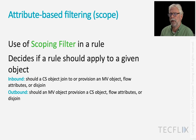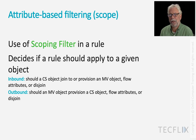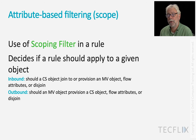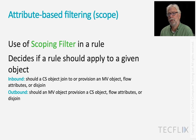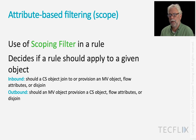Attribute-based filtering — here we're talking about the scoping filters of synchronization rules. This attribute-based filtering decides, based on the data in an object, whether a rule should apply to that particular object based on its attribute values. For inbound, we're asking whether a CS object should join to a metaverse object, or provision a new metaverse object, flow attributes to one, or disjoin from it. And for an outbound rule, should a metaverse object provision a CS object, flow attributes to it, or disjoin from it — all of those things are altered depending on whether the rule is in or out of scope.